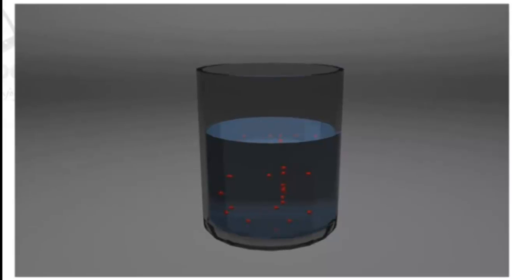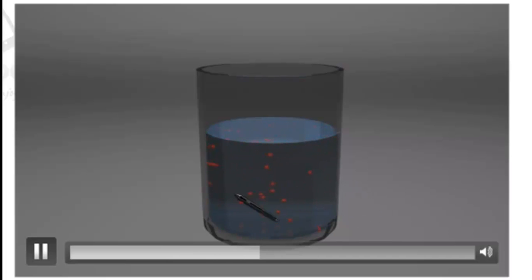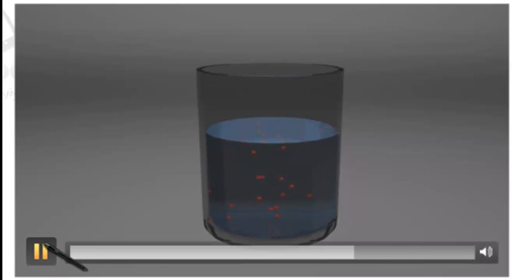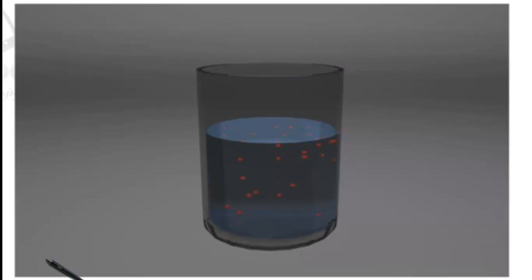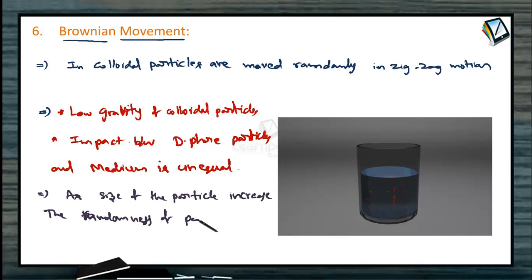As shown in this picture, due to the unequal impact between the dispersed medium and dispersed phase, particles move randomly. When they collide with walls, they bounce back and continue moving randomly. But when the size of the colloidal particles increases, they become very heavy and the impact between the two phases becomes equal, so their randomness decreases and they get settled. This means as the size of the particle increases, the randomness of particles decreases and they get settled, becoming a suspension.